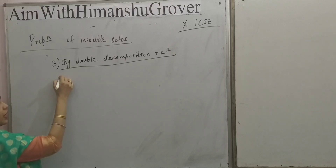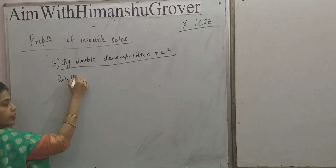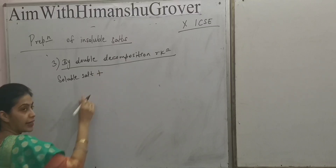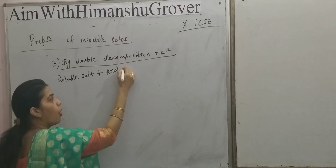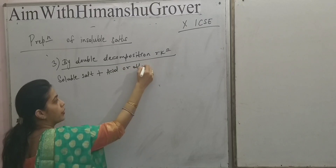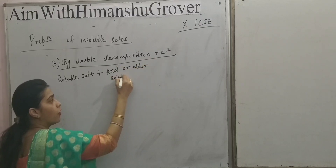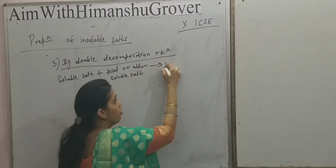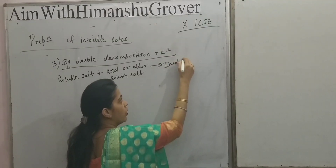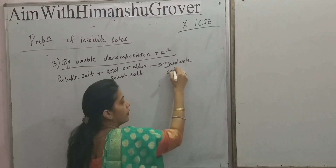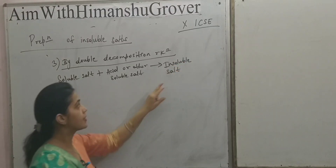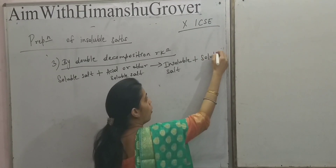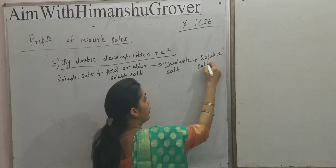In this process, one soluble salt is reacted with an acid or another soluble salt. The products formed are first an insoluble salt, that is a precipitate, and the second one is a soluble salt or acid.